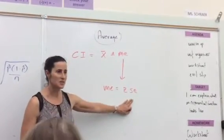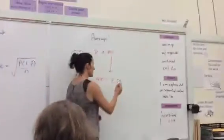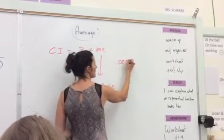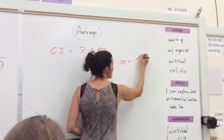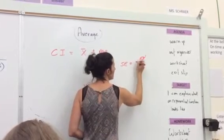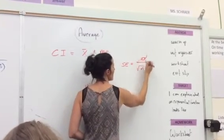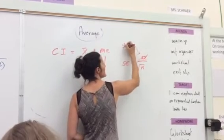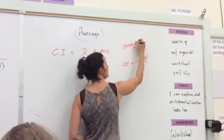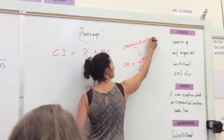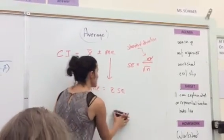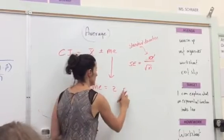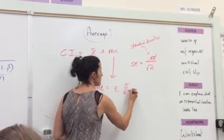The big difference here is that our standard error is not this equation. The standard error, when you're dealing with averages, is always sigma over the square root of n, where sigma is that standard deviation. So for this equation, I would replace the standard error with sigma over the square root of n.